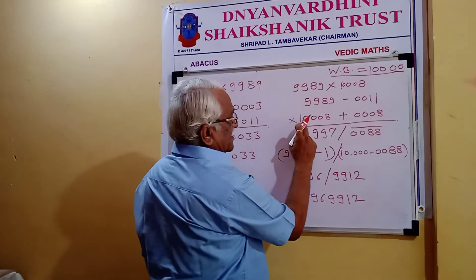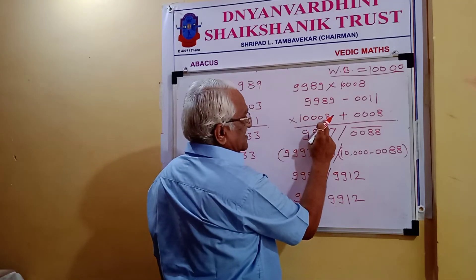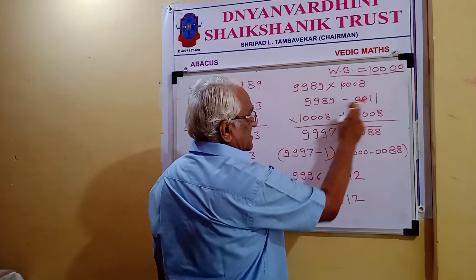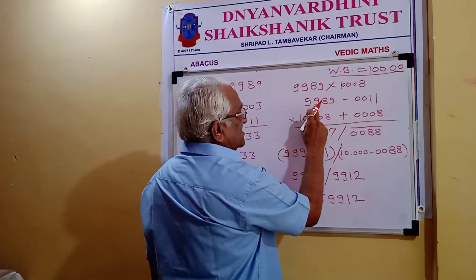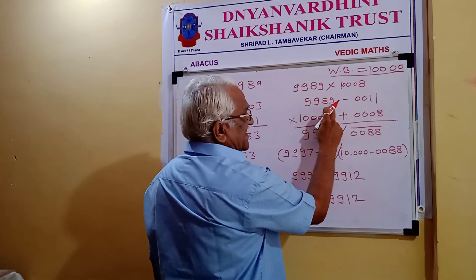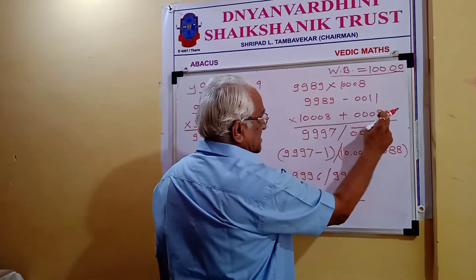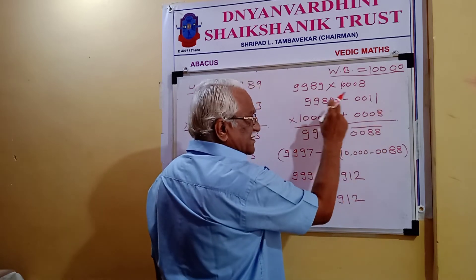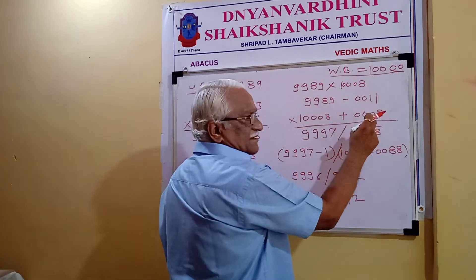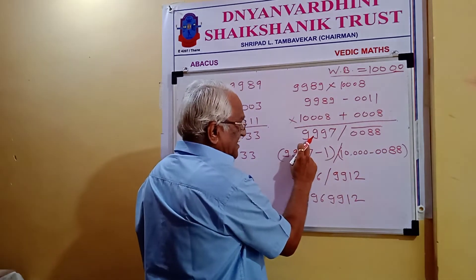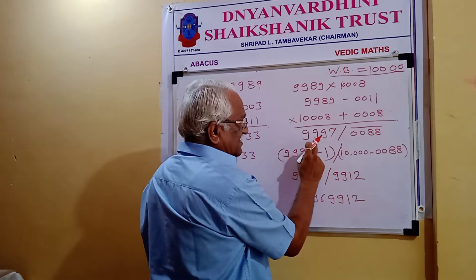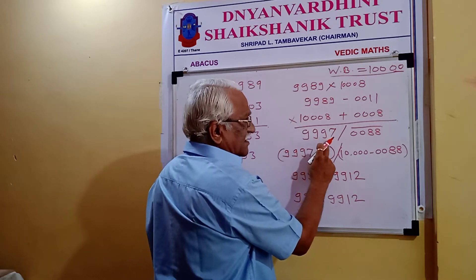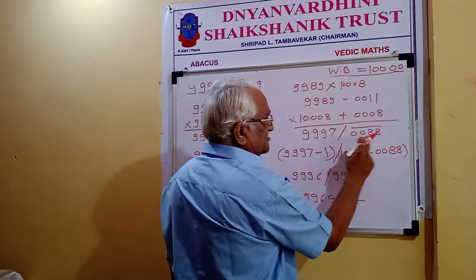In the same way, for the left part: 10,008 minus 11 or 9,989 plus 8 — whichever is easier. That gives 9,997. And the right side has bar 0088.